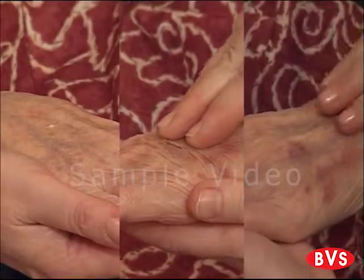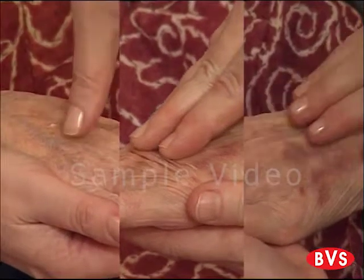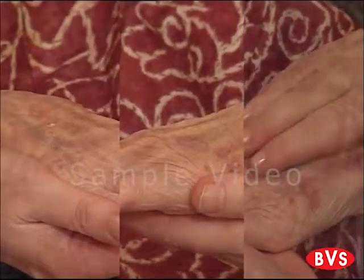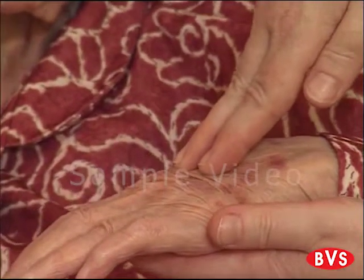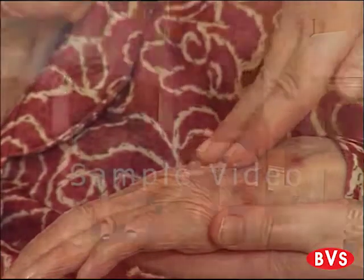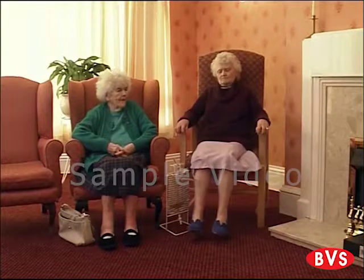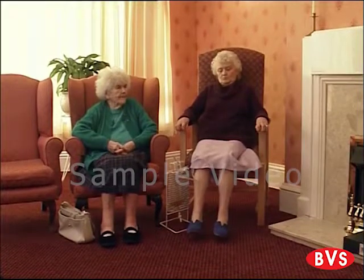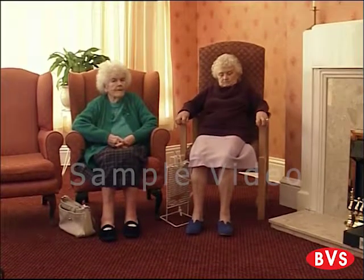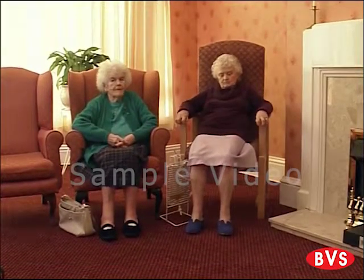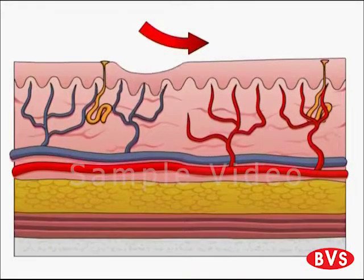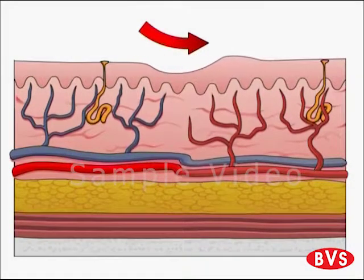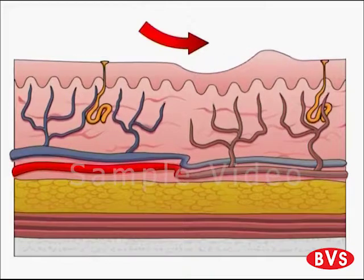However, pressure can be applied in different ways to the skin. If pressure is applied at an angle, it is called a shearing force. Service users can experience shearing forces if they slide down when sitting in a chair, for example. This drags their skin, the blood vessels become kinked, and then this blocks off the supply of blood to the skin.